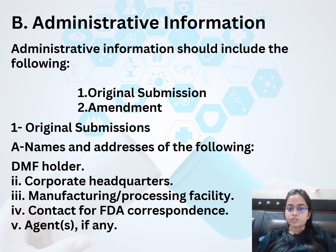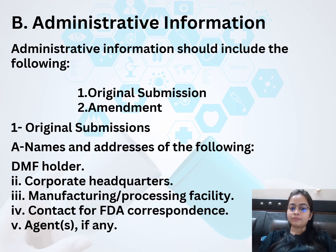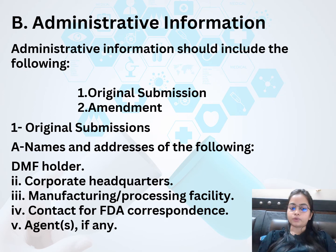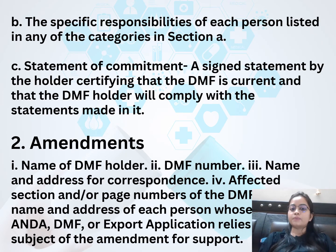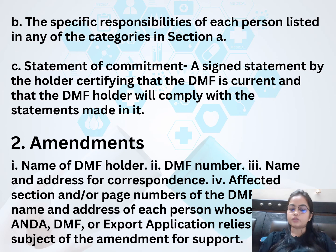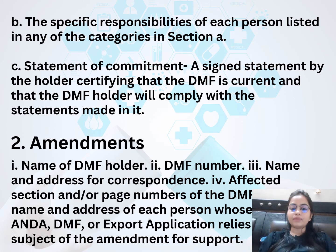Administrative information should include the following for original submissions and amendments. Amendment submissions should include: name and address of the Drug Master File Holder, Corporate Headquarters, Manufacturing Processing Facility, Contact for FDA Correspondence, and Agents, if any. Also required is a statement of the specific responsibilities of each person listed in any of the categories in Section A. A Statement of Commitment — a signed statement by the holder certifying that the Drug Master File is current and that it will comply with the statements made in it. Amendments include: name of Drug Master File Holder, Drug Master File Number, name and address for correspondence, and affected section or page numbers for the Drug Master File.